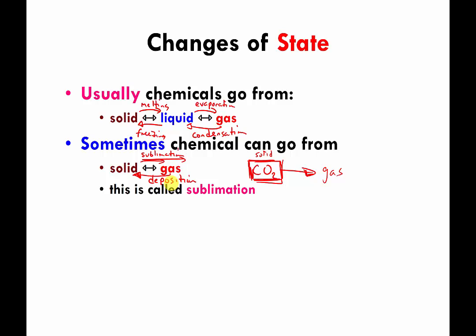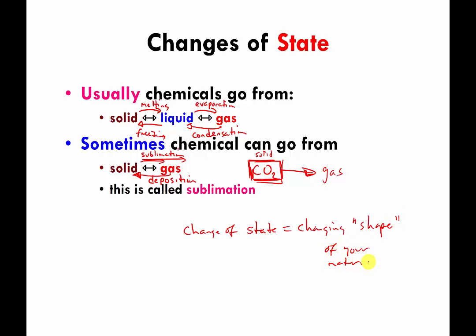So those are all examples of changes of state. A change of state roughly equals changing the shape of your material without actually changing what the material is made of.